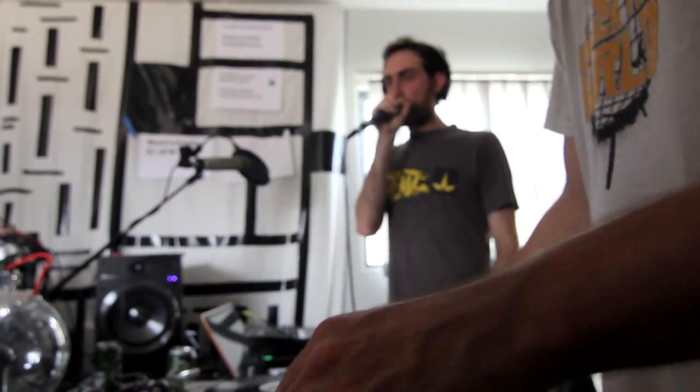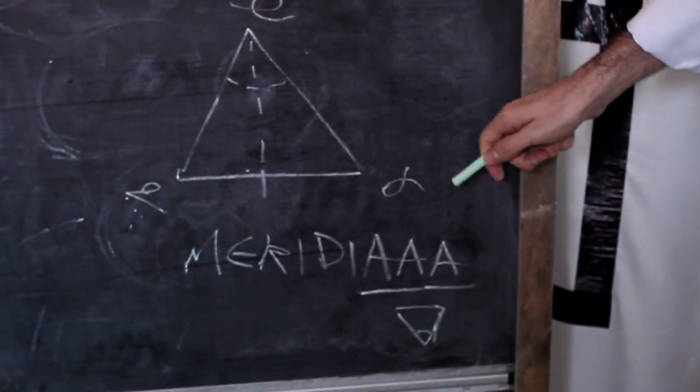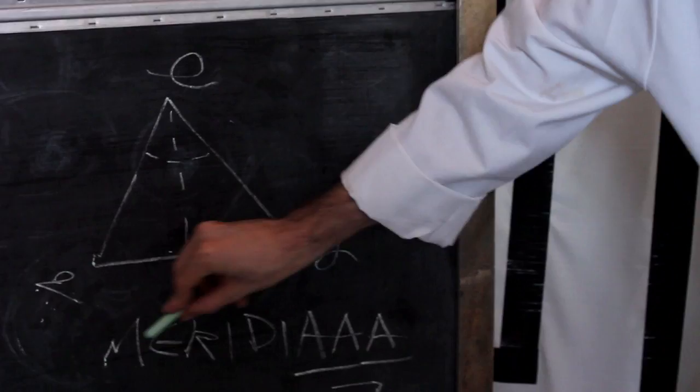As we see, eczema divided by alpha, by the tangential of alpha, gives you the meridian line.